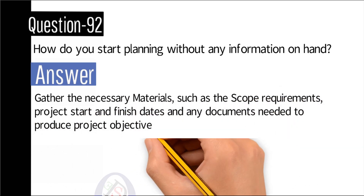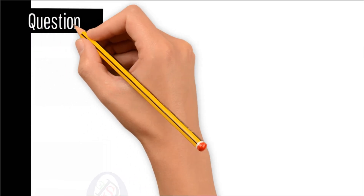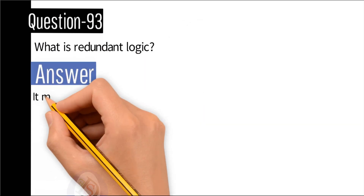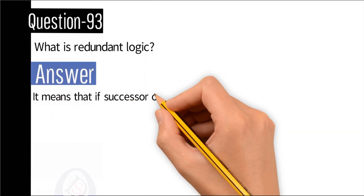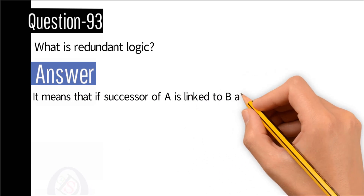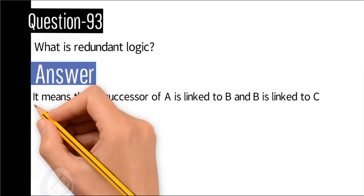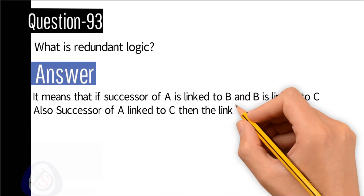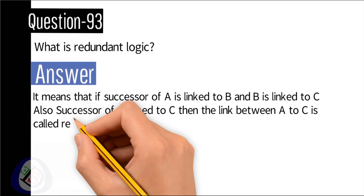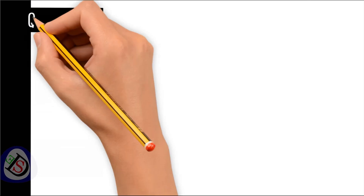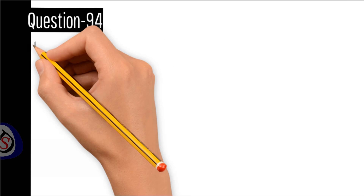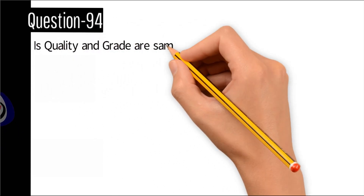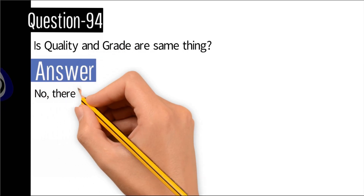Question number 93: What is redundant logic? Answer: It means that if a successor of activity A is linked to B, and B is linked to C, but also the successor of A is linked directly to C, then the link between A and C is called redundancy.